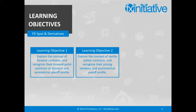The Garman-Kohlhagen option pricing model will also be used to underscore how the six pricing variables of an option determine the cost or premium of the contract.